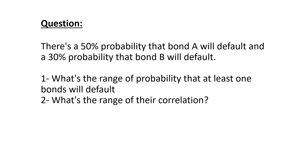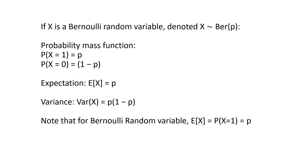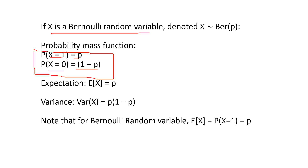Before we move on to the solution, here's a refresher on some of the basics. A Bernoulli random variable is the simplest kind of random variable — it takes on two values, 0 and 1. It takes on value 1 with probability P and value 0 with probability 1 minus P. The PMF is given by P(X=1) = P and P(X=0) = 1 minus P. The expectation equals P and the variance equals P times (1 minus P).